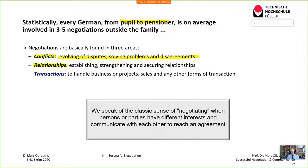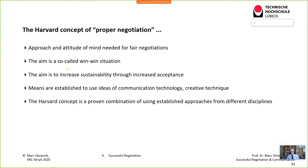The second area is relationships — establishing, strengthening, and securing them. In business, this means building customer-enterprise relationships and fostering customer loyalty, which is a key differentiating factor today. The third area is transactions: business projects, sales, and other forms of dealing. In the classical sense, negotiation occurs when persons or parties have different, sometimes diverging interests and communicate to reach an agreement.